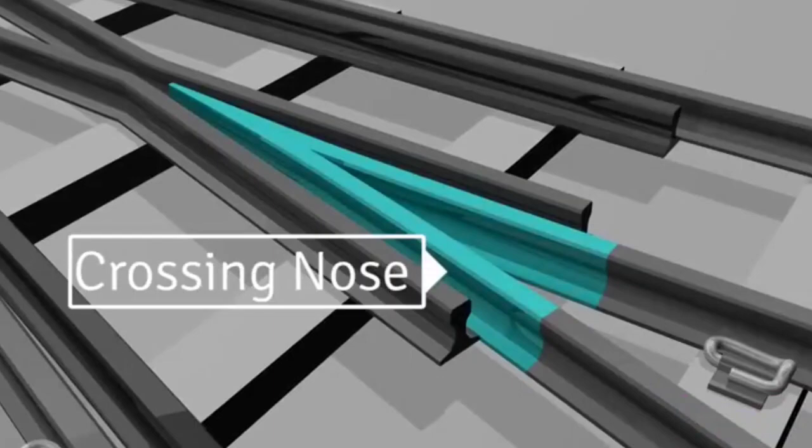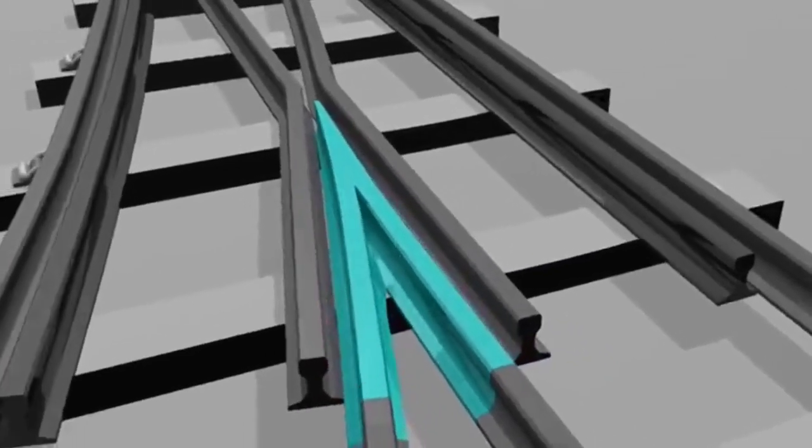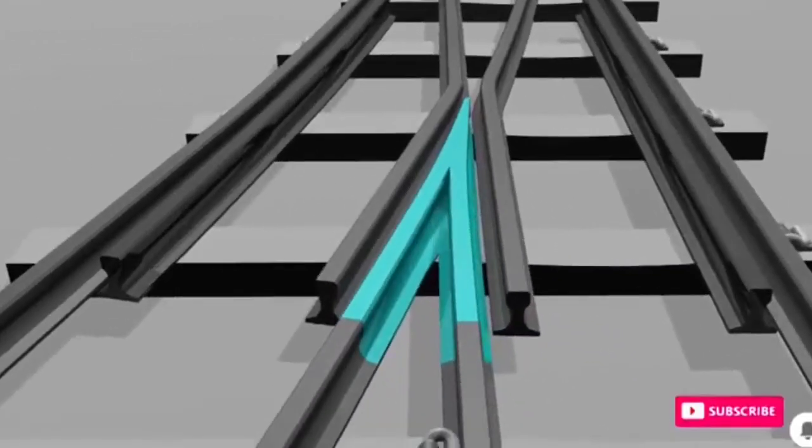Crossing nose is a device introduced at the point where two gauge faces cross each other, to permit the flanges of a railway vehicle to cross from one track to another.